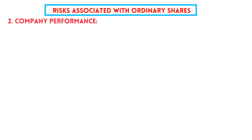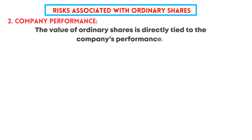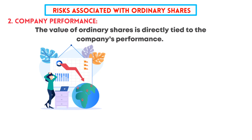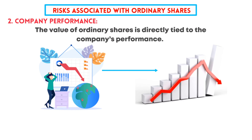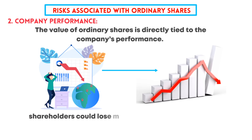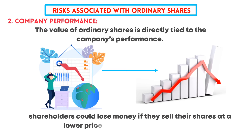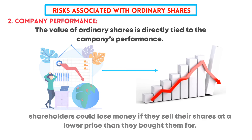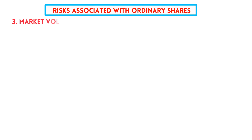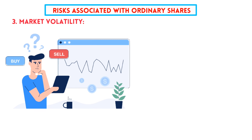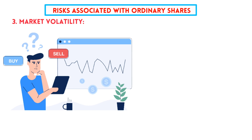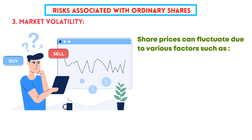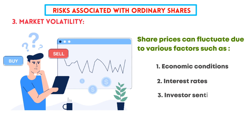Second, company performance: the value of ordinary shares is directly tied to the company's performance. If the company struggles financially, its stock price could decline, and shareholders could lose money if they sell at a lower price than they paid. Third, market volatility: ordinary share prices can fluctuate due to various factors such as economic conditions, interest rates, and investor sentiment.